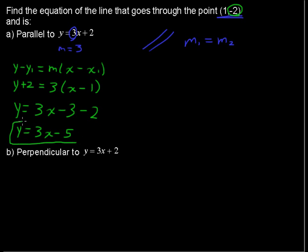And then y equals 3x minus 5. So there is a line that is parallel to the 3x plus 2 line, but it goes through the point (1, -2).